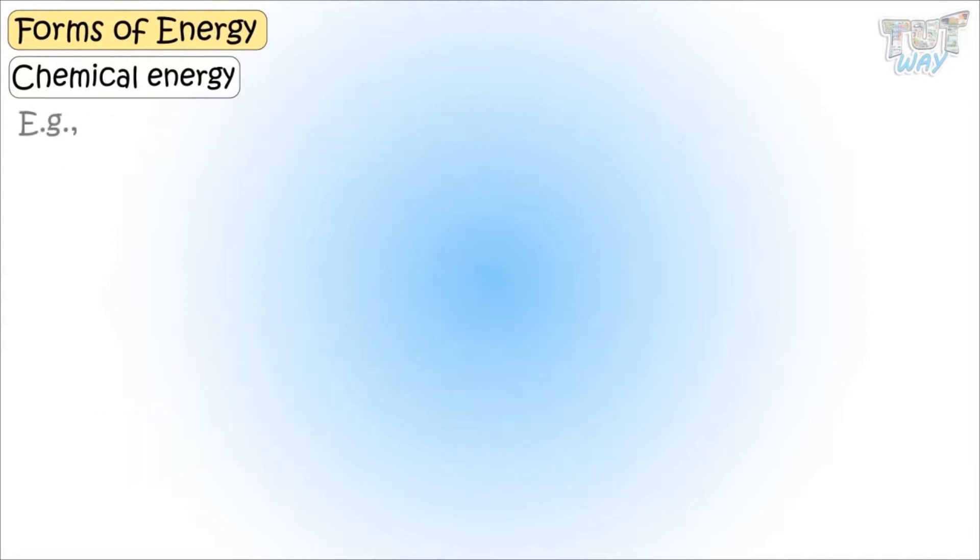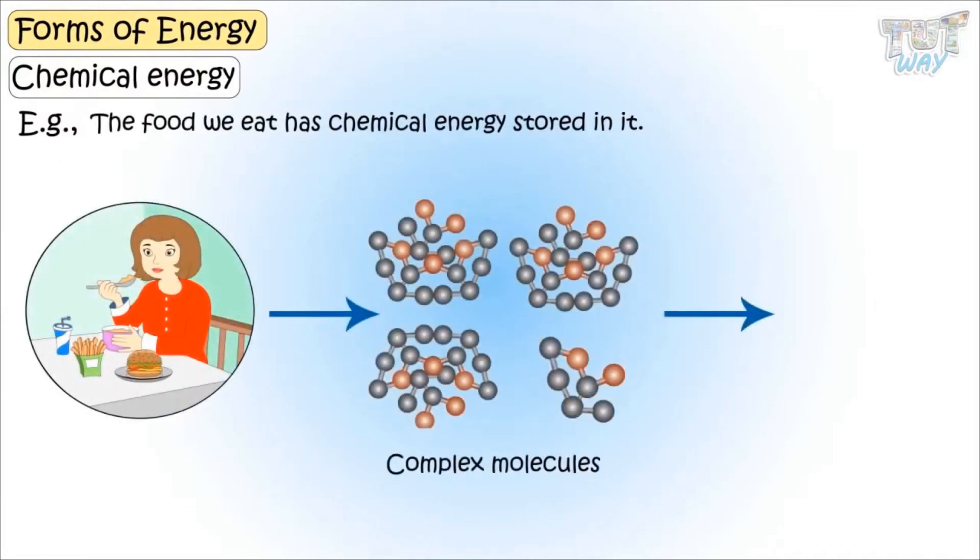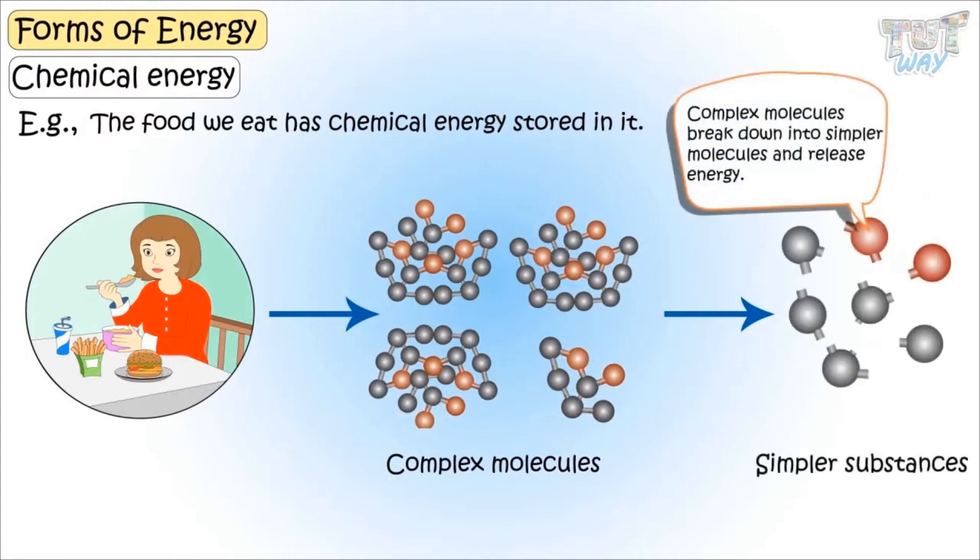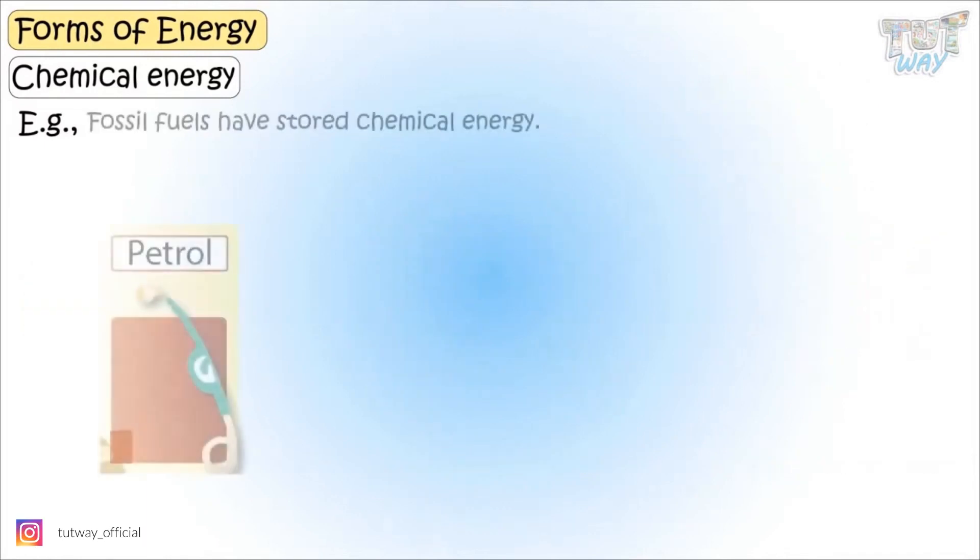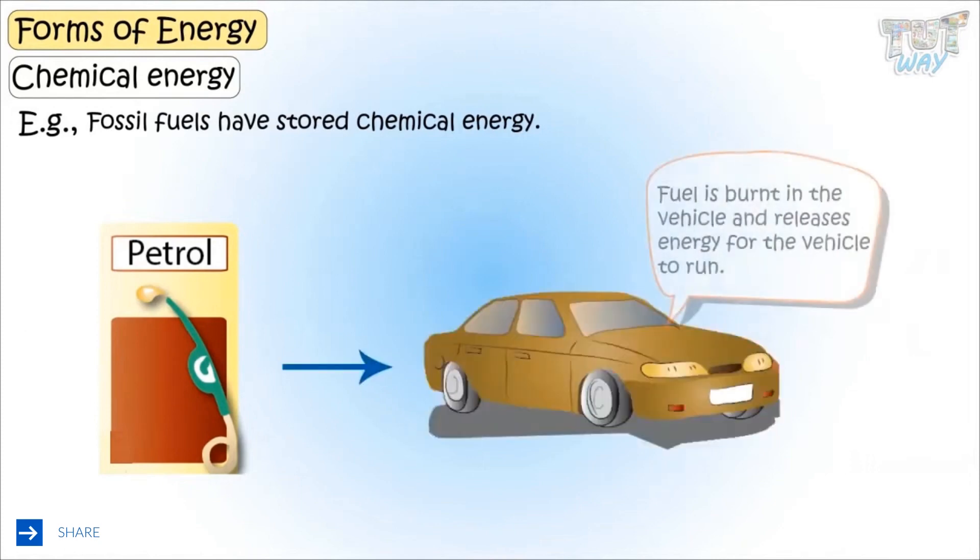Let's see some examples. When we eat food, the complex molecules of food are broken down into simpler molecules and release this chemical energy. And this is the energy that we use to do our daily activities. Fossil fuels have stored chemical energy in it. And it is released when the fuels are burnt inside the vehicle and that energy is used by the vehicle to run.